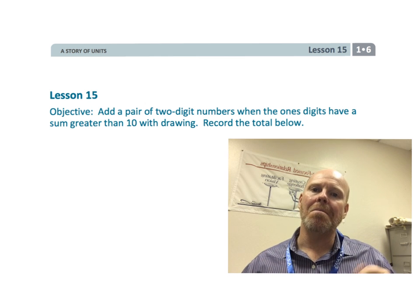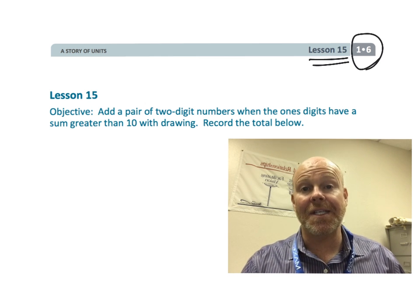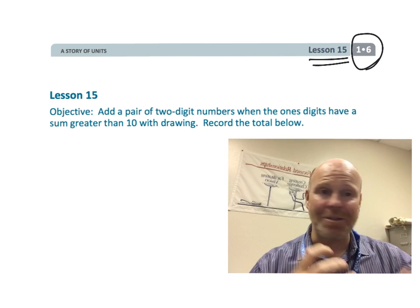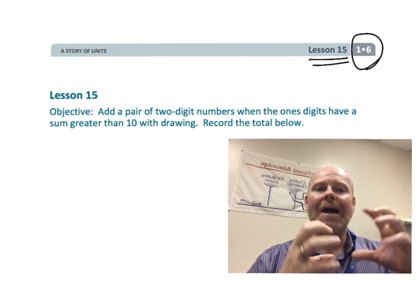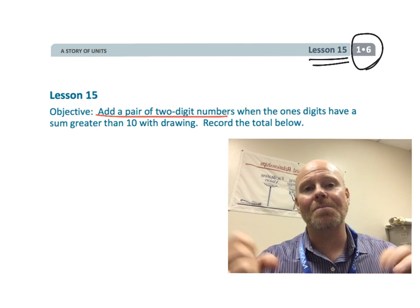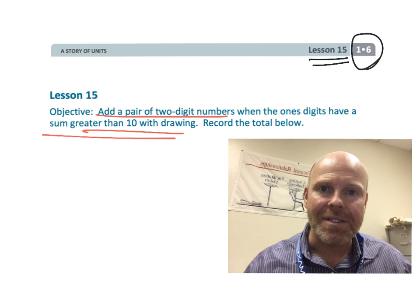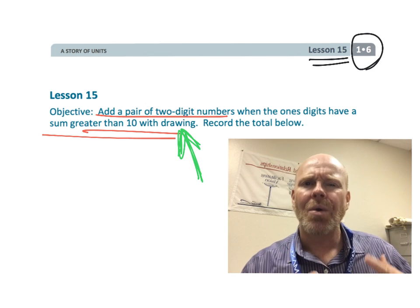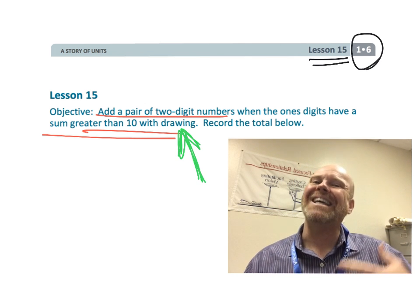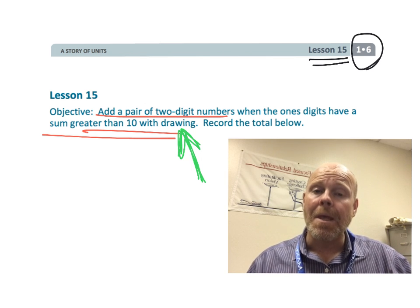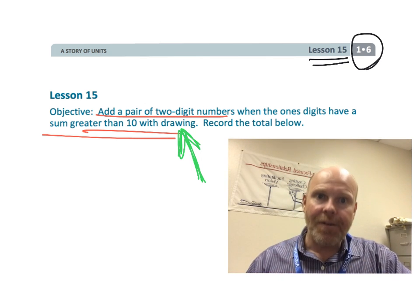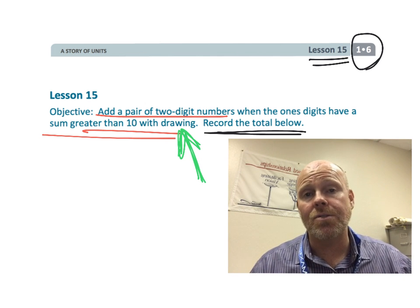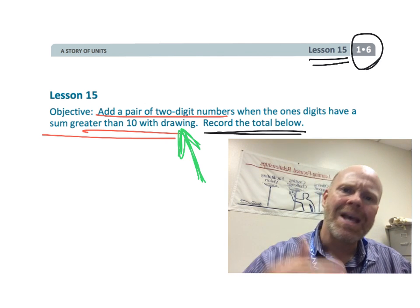Alright, this is first grade module 6 lesson 15 and this is an exciting lesson because students are still going to be adding a pair of two-digit numbers with regrouping, but what's really cool about this lesson is that we're getting really close to that standard algorithm. We're still going to be drawing pictures so it won't be exactly the standard algorithm, but you're going to see a definite move towards that standard algorithm. We're going to be using quick tens as our drawing. Let's get started.